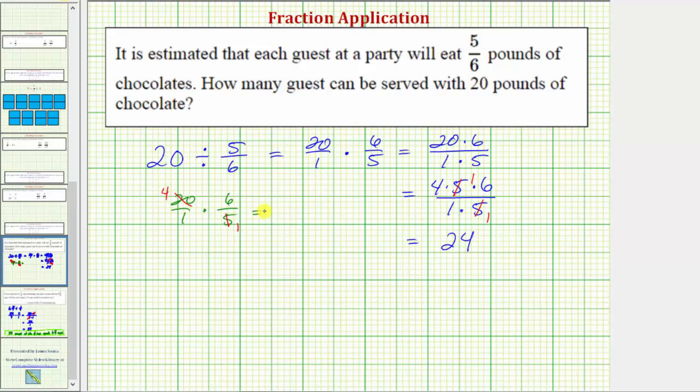Notice we get the same result. We get 4 times 6, which is 24, all over 1 times 1, which also gives us 24. So this method is a little bit faster, but the previous method is nice because we actually see the common factor.